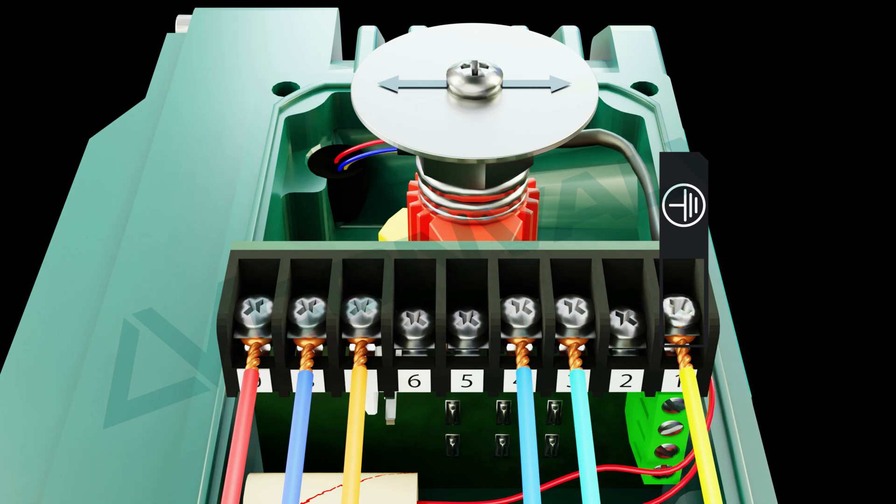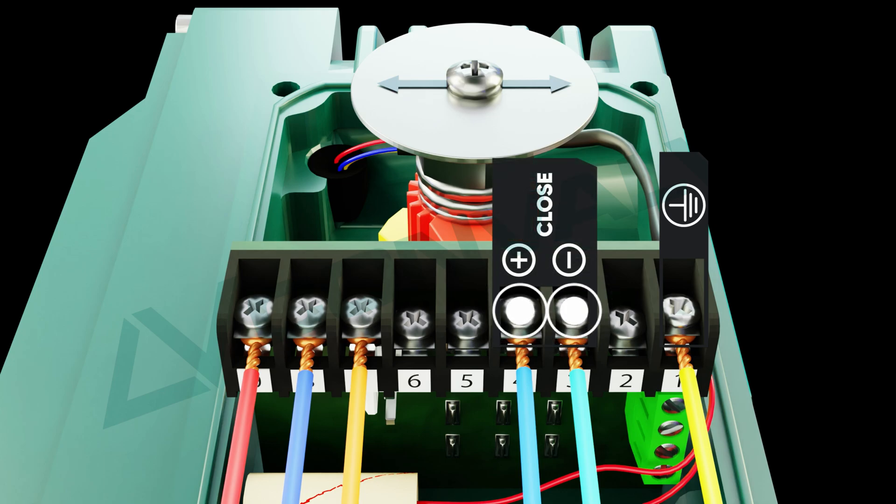To rotate or close the actuator in the clockwise direction, apply a negative DC voltage to terminal 3 and a positive DC voltage to terminal 4. The actuator will rotate clockwise until it reaches the internal limit switch and then shuts off.